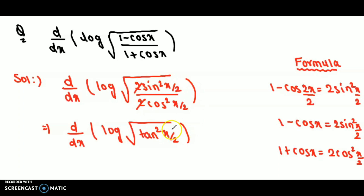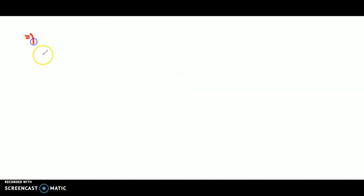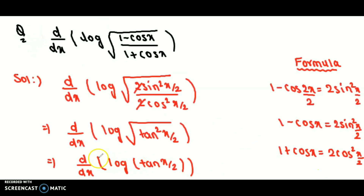Next we write this as d/dx of log of square root of tan²(x/2). The square and square root cancel, so we get simply log of tan(x/2).